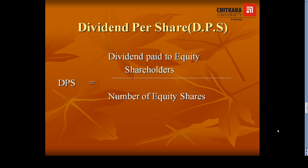The formula for calculating DPS is dividend paid to equity shareholders divided by number of equity shares. Whatever dividend the company has paid to equity shareholders is available in the profit and loss account statement. The number of equity shares is available on the liability side of the balance sheet, where we can see the equity capital and how many equity shares exist in the business.